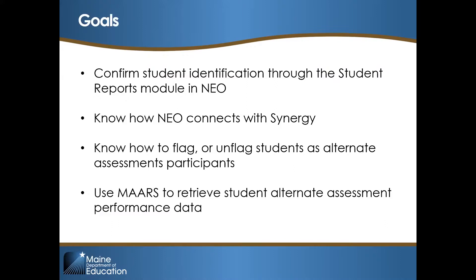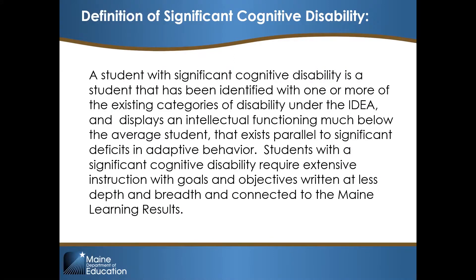Let's begin with the definition of significant cognitive disability. A student with significant cognitive disability is a student identified with one or more of the existing categories of disability under the IDEA, and displays intellectual functioning much below the average student, existing parallel to significant deficits in adaptive behavior. Students with a significant cognitive disability require extensive instruction with goals and objectives written at less depth and breadth, connected to the main learning results.